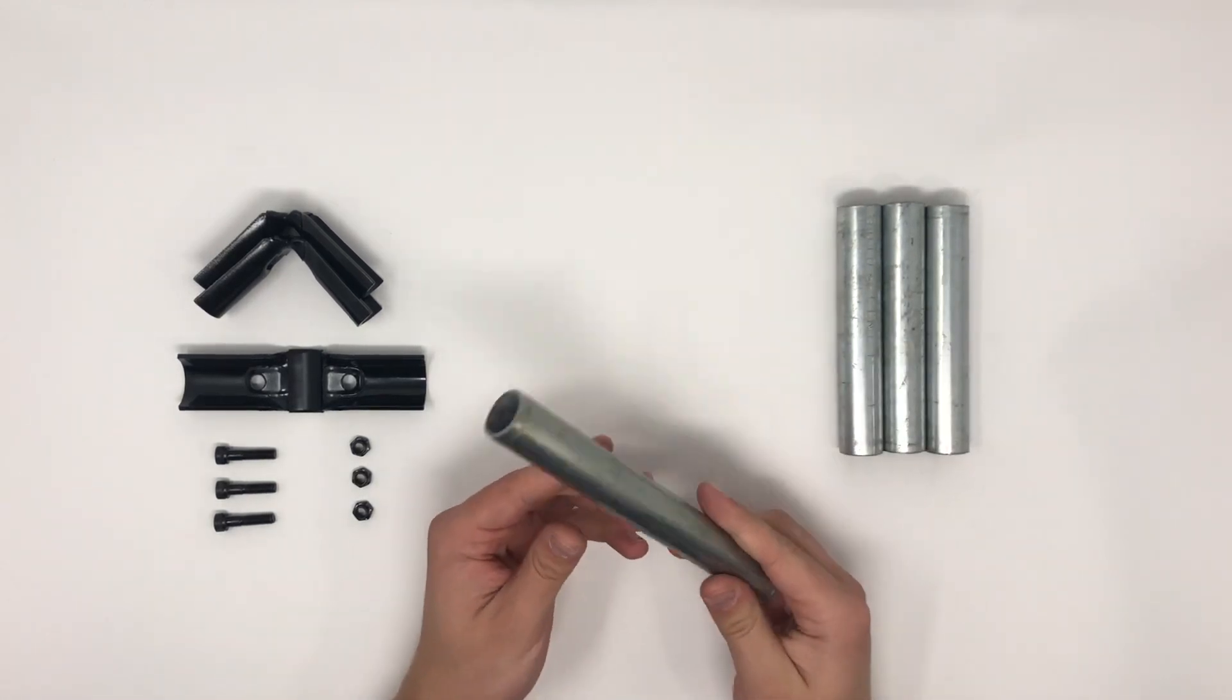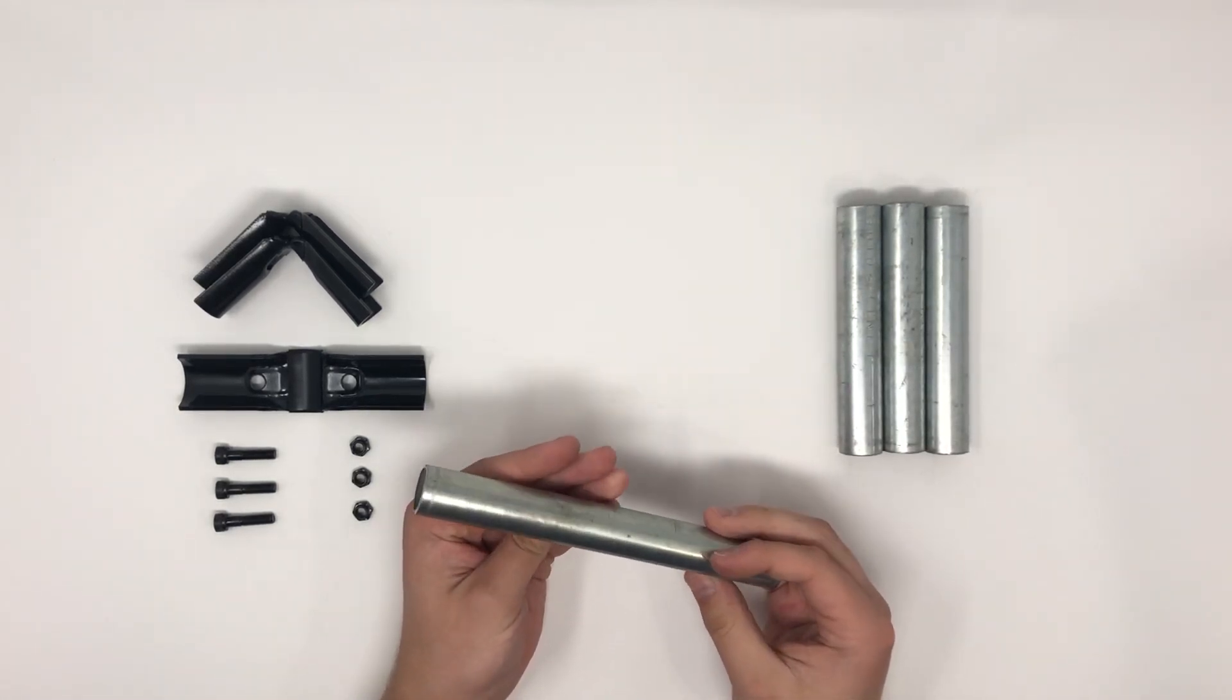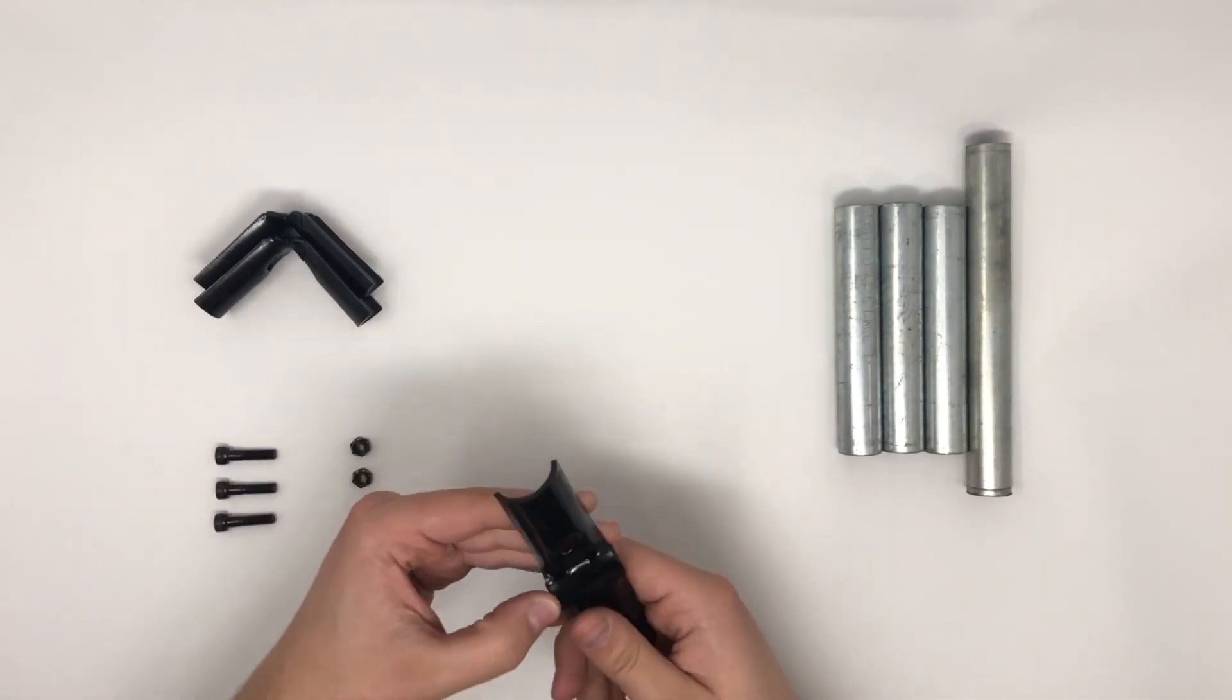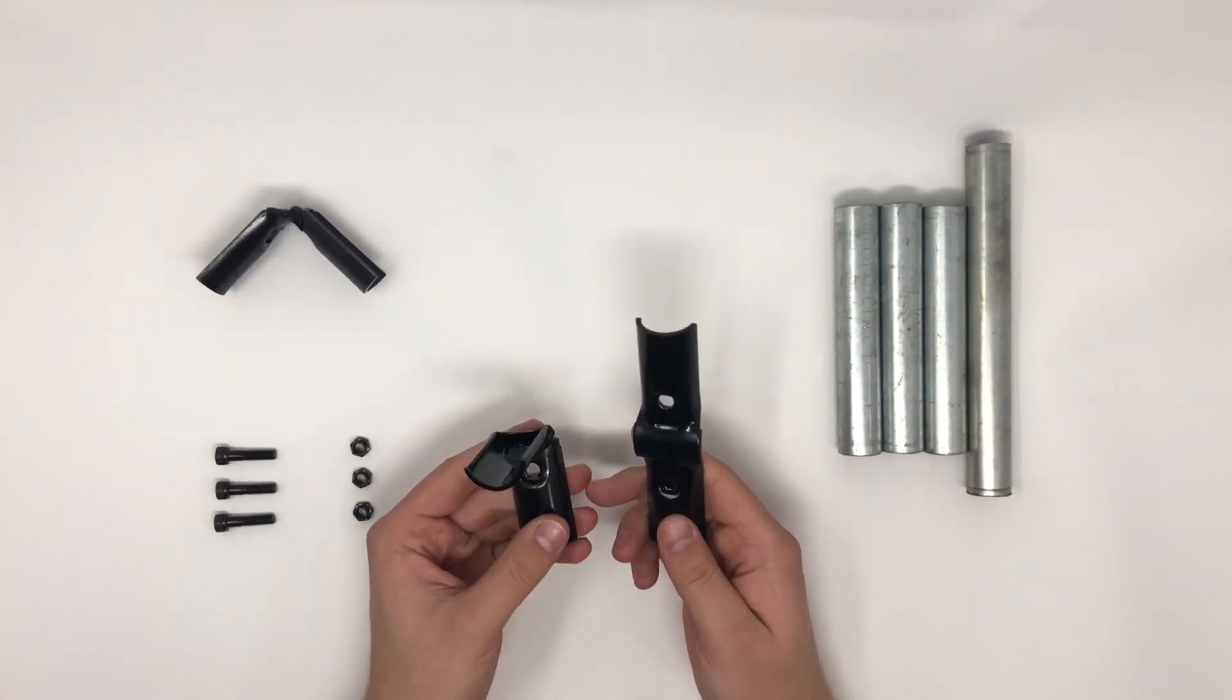Standard three-quarter inch conduit is a cheap and sturdy building material. The maker pipe system was designed as a simple and reusable solution for you to build your projects with standard conduit.